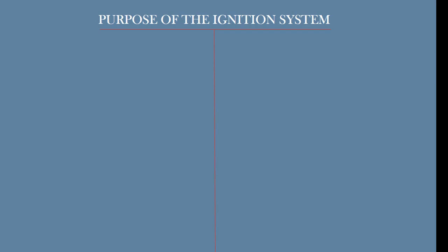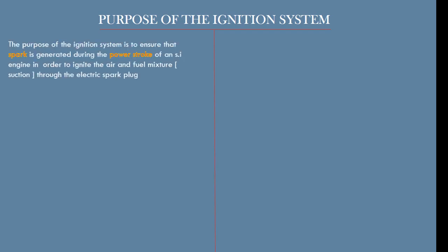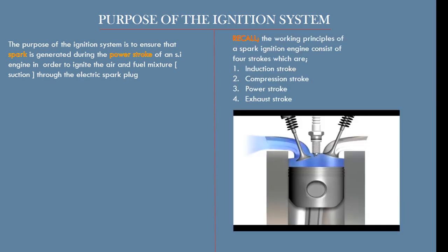The purpose of the ignition system is to ensure that a spark is generated during the power stroke of a spark ignition engine, in order to ignite the air and fuel mixture through the action of the electric spark plug. For those who remember or have an idea about the working principle of a spark ignition engine — the spark ignition engine consists of four strokes.